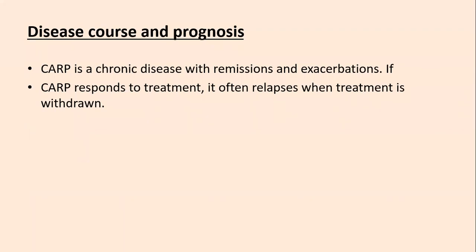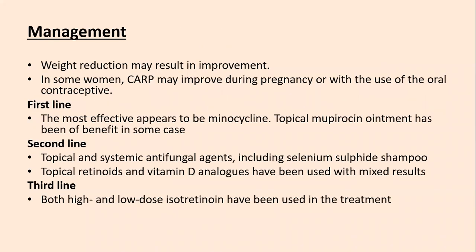CARP is a chronic disease with remissions and exacerbations; it responds to treatment but often relapses when treatment is withdrawn. Management includes weight reduction. Some women with CARP improve during pregnancy or with oral contraceptives. First-line treatment: the most effective appears to be minocycline. Topical mepacrine ointment has been of benefit in some cases. Second-line treatment includes topical and systemic antifungals including selenium sulfide shampoo, topical retinoids, and vitamin D analogs with mixed results. Third-line treatment is both high and low dose isotretinoin.